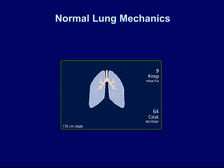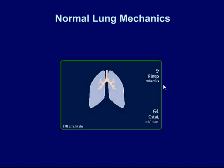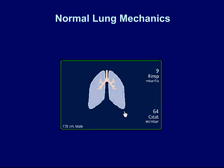Here's an example with a patient with normal lung mechanics. As you can see, the resistance line and the compliance is 64. The bronchial tree is nice and pink and the lungs look normal.